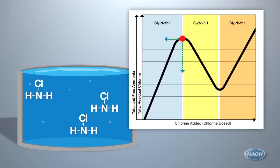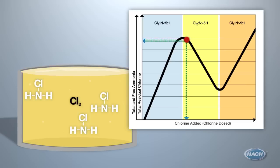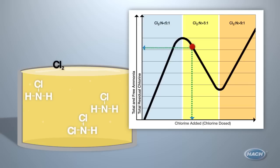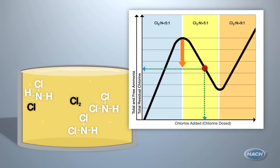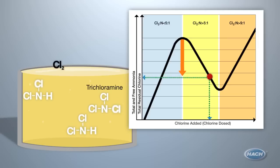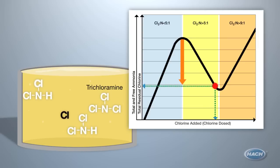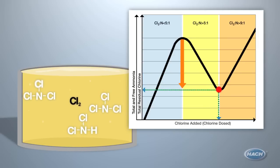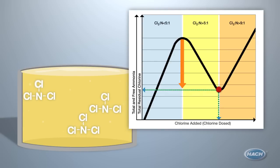If you continue to dose chlorine past this state, you begin to experience di- and finally trichloramination. These states are not ideal. It causes your chlorine residual to drop radically, although you are adding more chlorine. You will experience taste and odor issues when you are in this zone, and your disinfecting power is drastically cut.